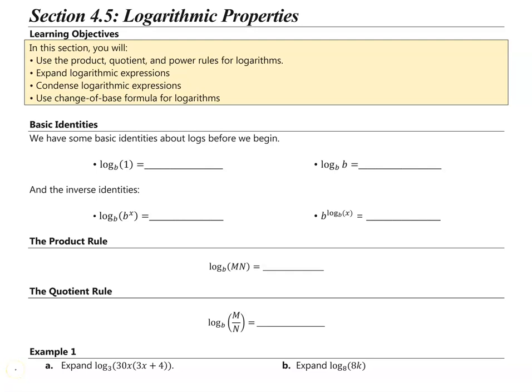Section 4.5: Logarithmic Properties. In this section, you will use the product, quotient, and power rules for logarithms, expand logarithmic expressions, condense logarithmic expressions, and use the change of base formula for logarithms.